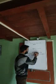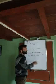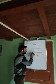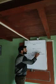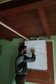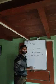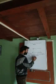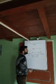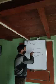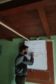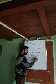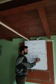Dear students, let us know the elements of a rectangle. We have four sides: AB, BC, CD, and AD. We have four angles: angle A, angle B, angle C, and angle D.